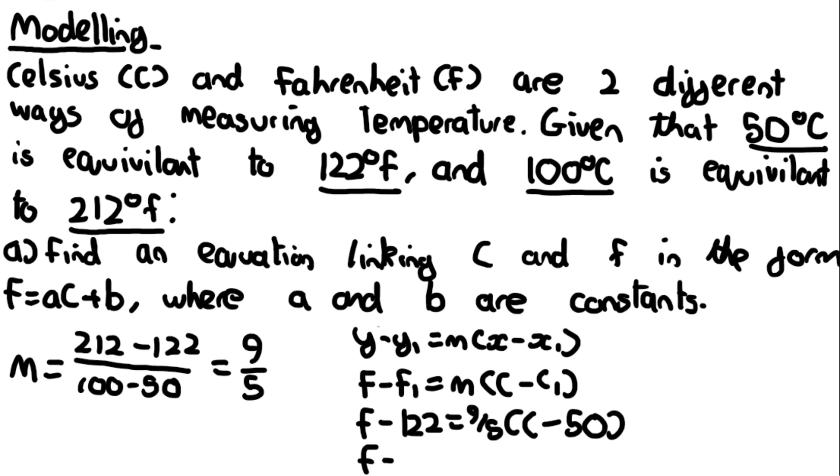We can expand this to f minus 122 equals 9 over 5 c minus 90.